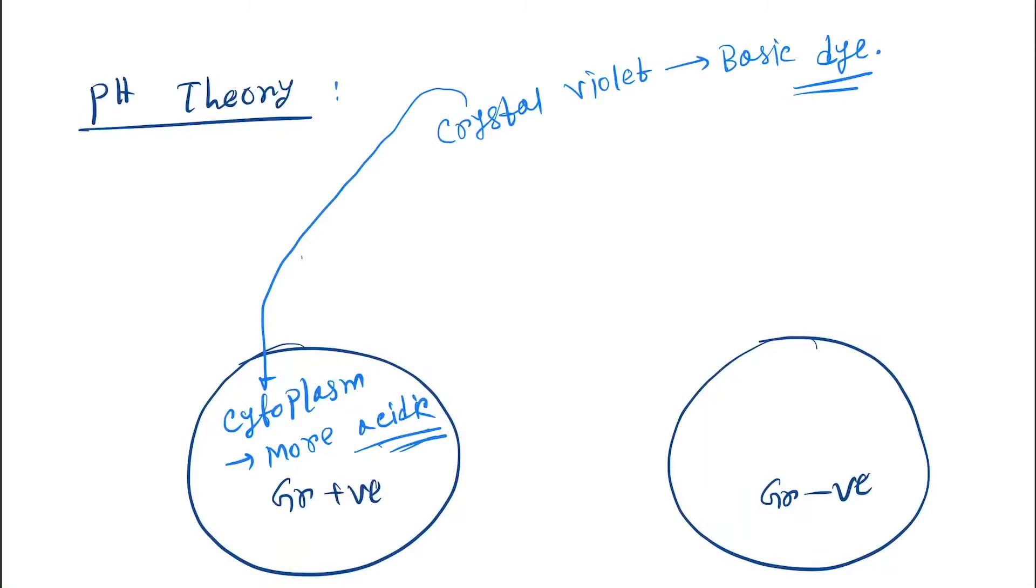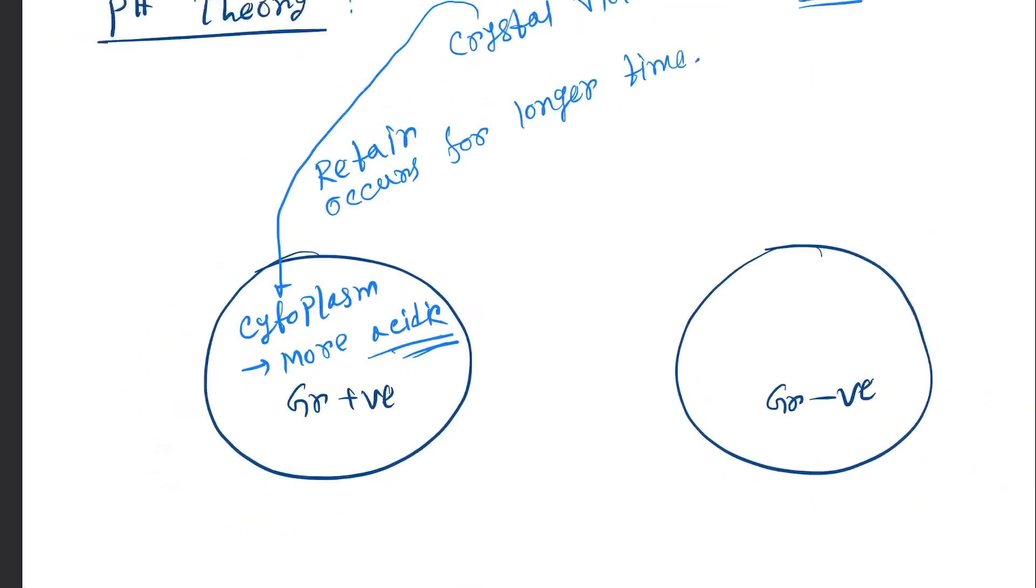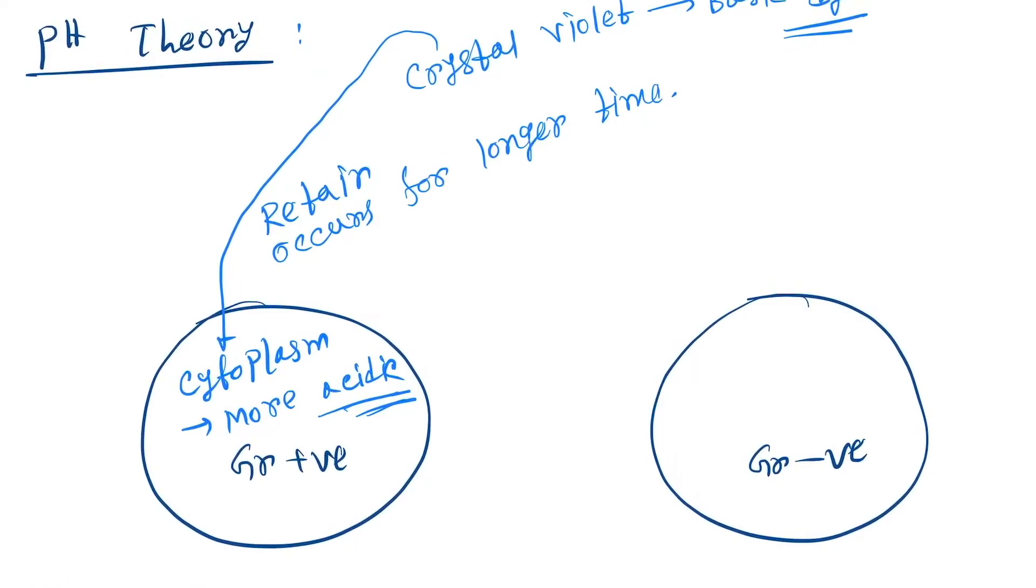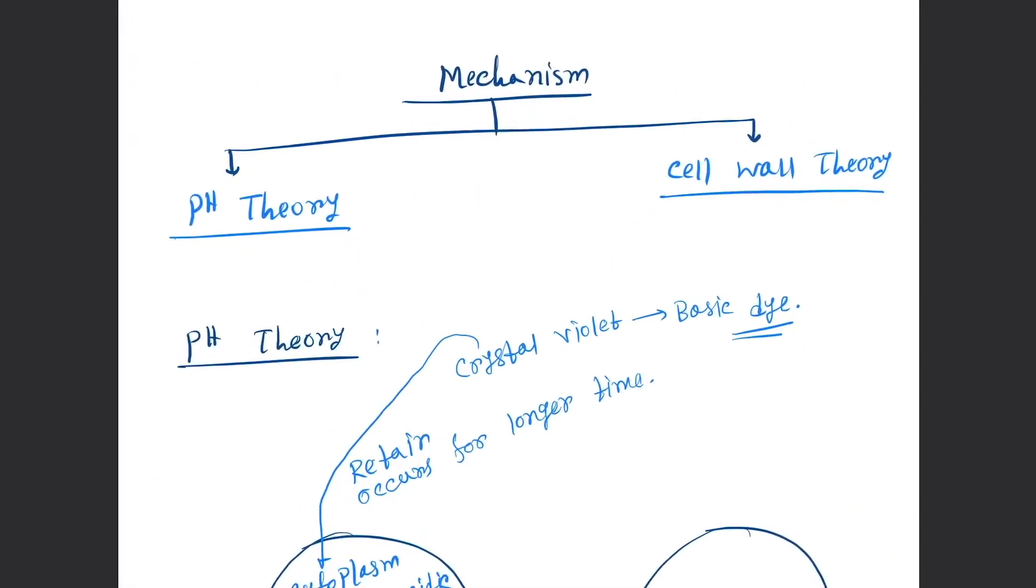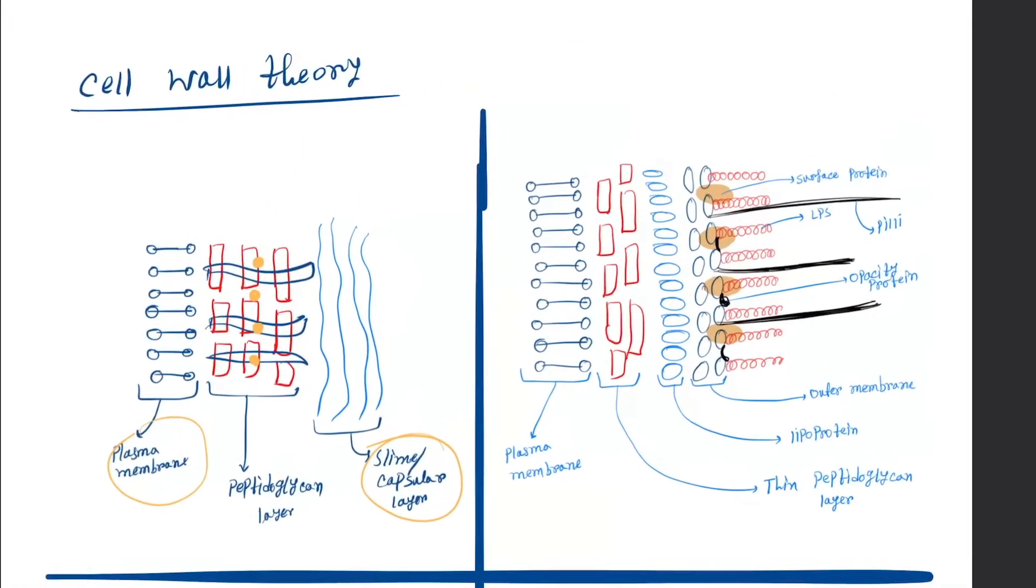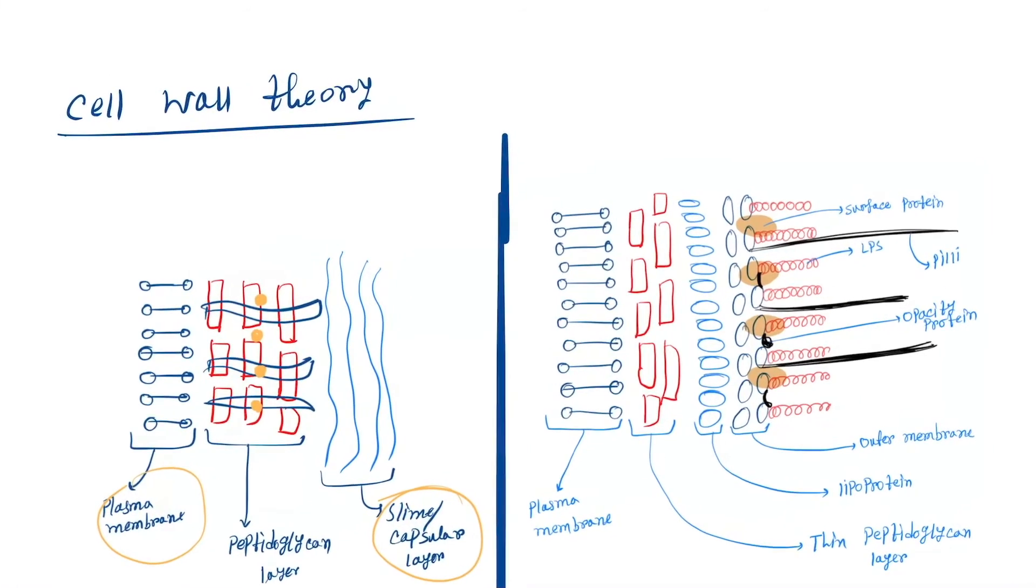As a result, it will look violet. This is the pH theory. Now come to the cell wall theory. Here you can see gram positive bacteria and gram negative bacteria.